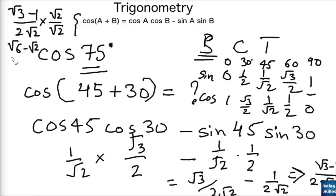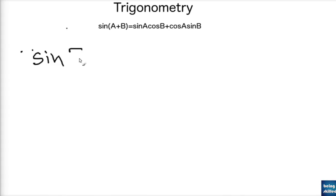To simplify further, it is suggested that you shouldn't have square root values in the denominator. So we multiply numerator and denominator by √2. This gives (√3 minus 1) times √2 upon 2√2 times √2, which equals (√6 minus √2) upon 4. So the final value of cos 75 is (√6 minus √2) upon 4.